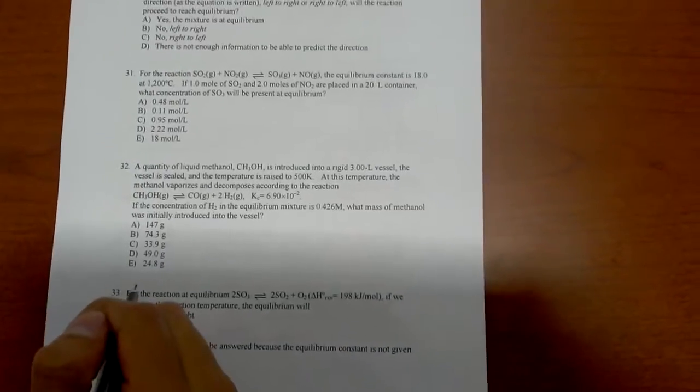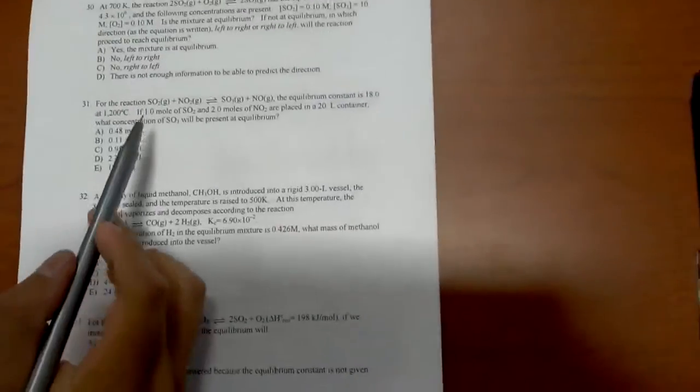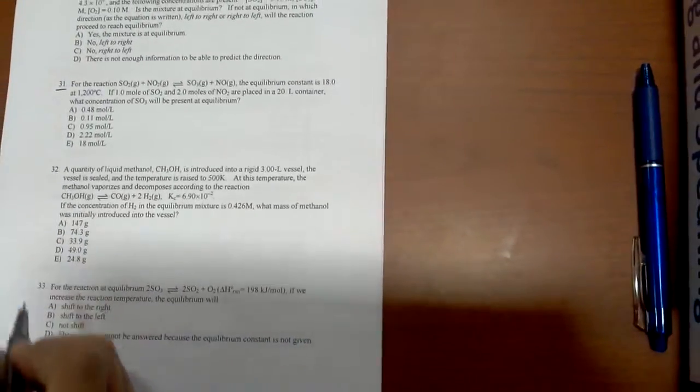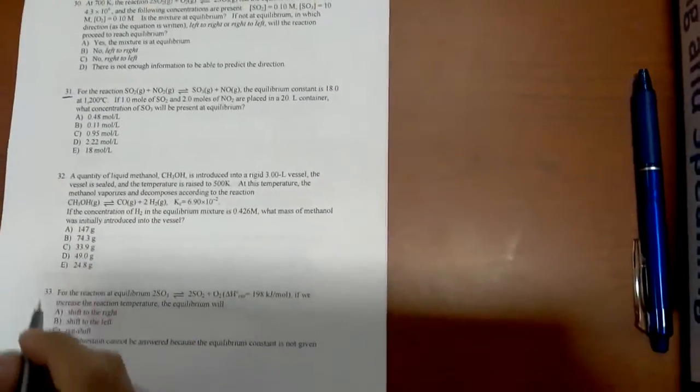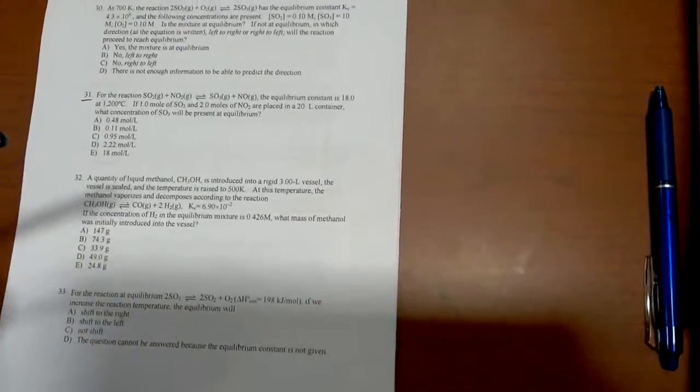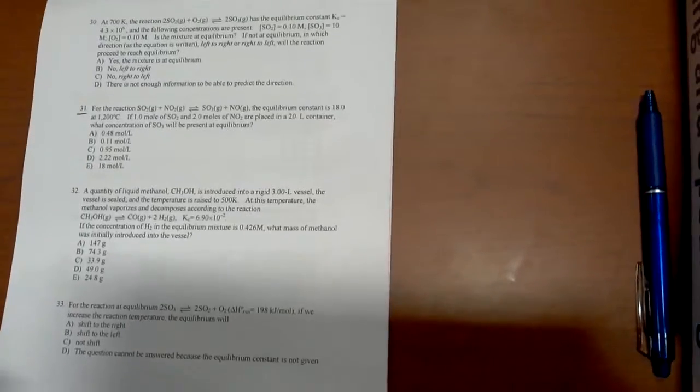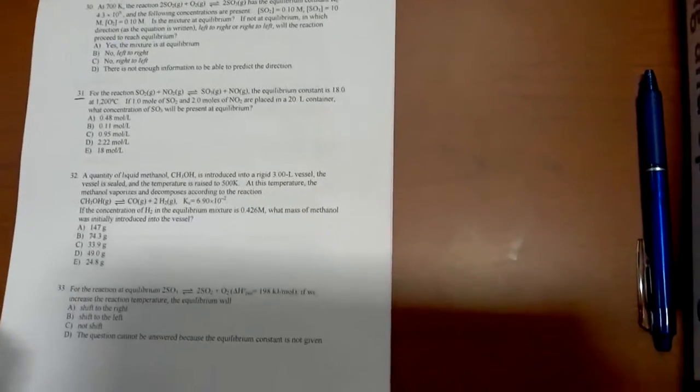Okay, so for this reaction SO2 gas plus NO2 gas yields SO3 gas plus NO, the equilibrium constant is 18 at 1200 degrees Celsius. If one mole of SO2 and two moles of NO2 are placed in a 20 liter container...